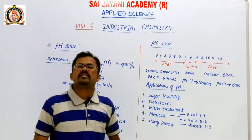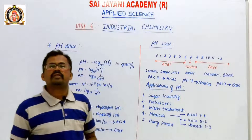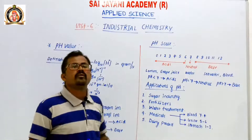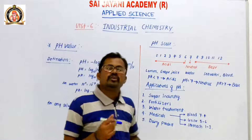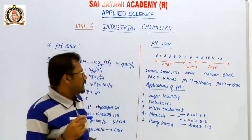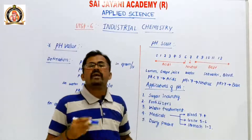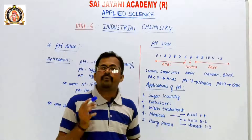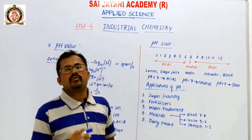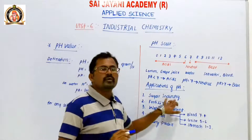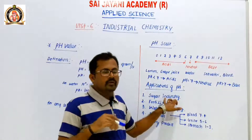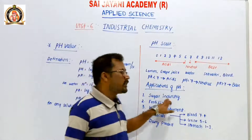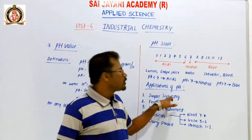What are the applications of pH? In the sugar industry, pH value plays a very important role. In order to use a proper chemical composition of sugar, we have to maintain the pH value. So pH value plays a very important role in the sugar industry to make sugar.